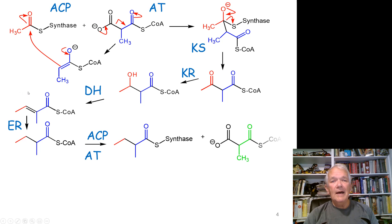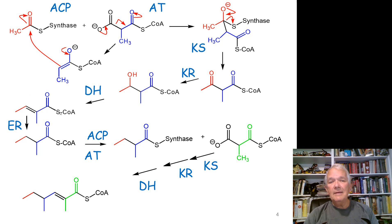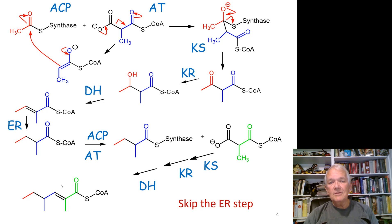Then we simply continue to our next step and go through the synthesis again. We're going to reduce the ketone, do the dehydration — but we want that double bond in our product, so we're going to skip the reduction step of the alkene and keep the alkene. So that's where we've changed things.